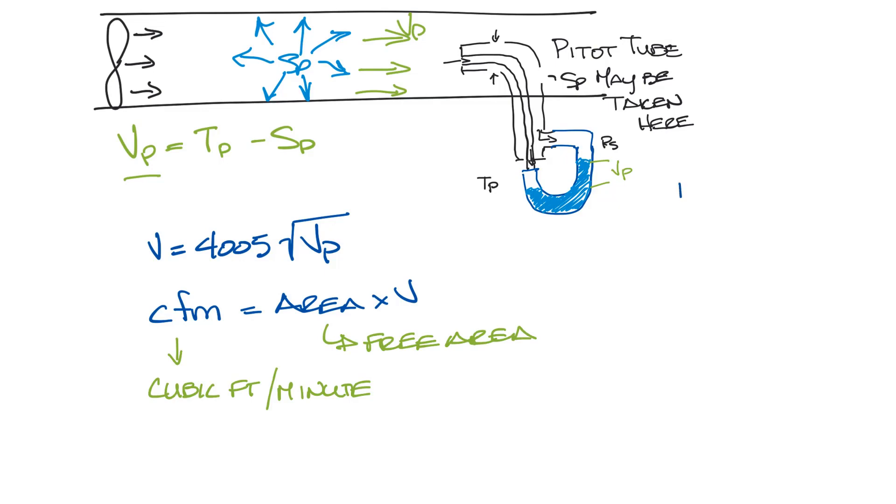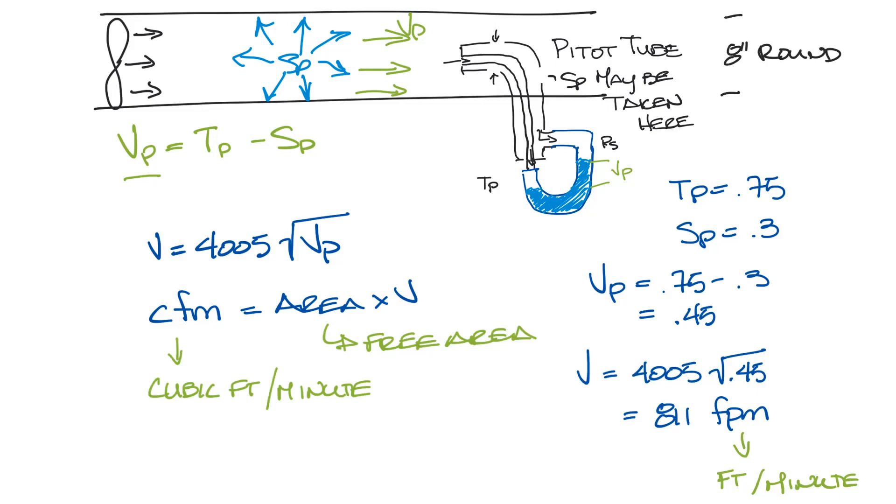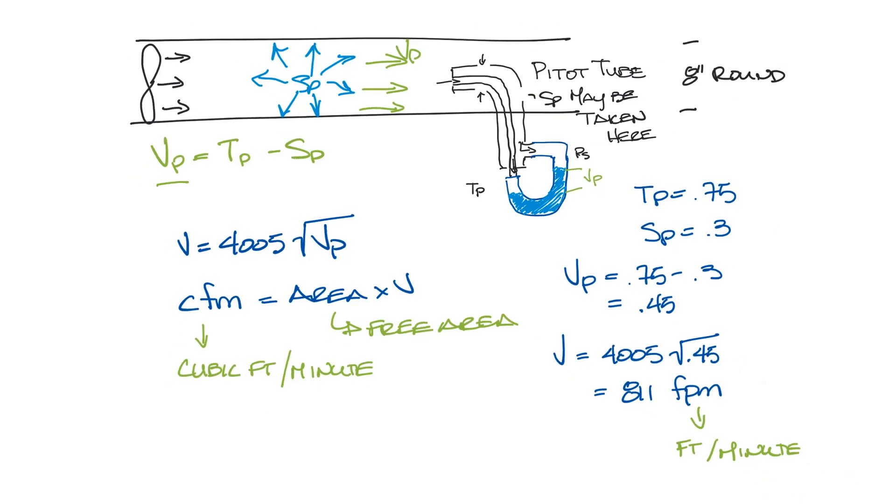Let's look at a quick example. Say we have a system with a total pressure of 0.75 and a static pressure of 0.3. Your velocity pressure is 0.75 minus 0.3, which is 0.45. Your velocity is 4005 times the square root of 0.45, which comes to 811 feet per minute. Now let's say this is an 8-inch round duct.